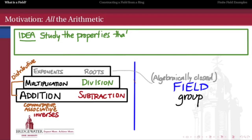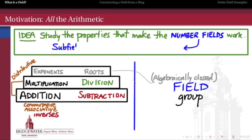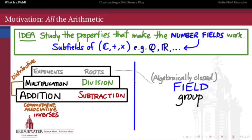The idea is that we want to take the properties that make the so-called number fields work and examine those properties. When I say number fields, I mean subfields of the complex numbers with the usual operations of addition and multiplication. So, for instance, the rational numbers and the real numbers are number fields. One of the more interesting places we'll go is to look at what other number fields exist between the rational numbers and the real numbers that are also subfields of the complex numbers.